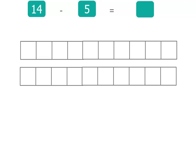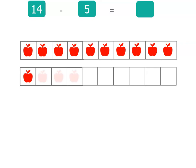See these 10 frames, I'm going to make 14. I'm going to use apples. So I've got 10 apples and another 4 apples. Well, if I'm taking away 5, what I do is I first take away however many I've got to get back to the next 10.